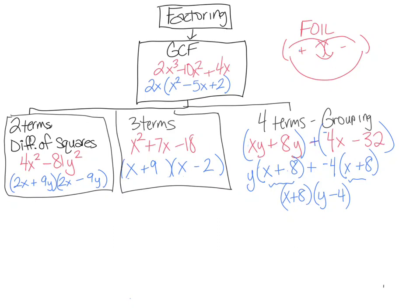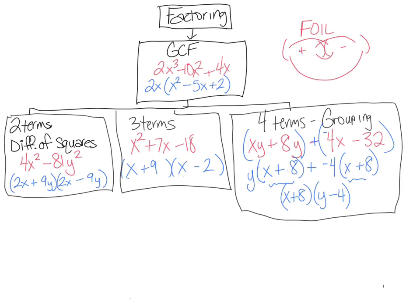You can always check using FOIL: first is xy, outer is negative 4x, inner is 8y — those are not like terms so they stay separate — and last is negative 32. Those are the different ways of factoring. If you just needed a quick recap and think you're good to go, you can stop here. I'm going to do a few more problems — specifically ones pulled from your Hawks assignment, same types but different numbers.